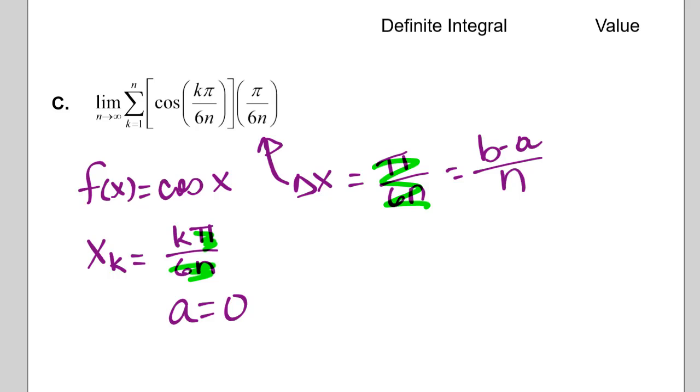We could factor off the 1 over n from each of these. So we get pi over 6 times 1 over n. And that's equal to b minus a times 1 over n. Okay. So the 1 over n's cancel, we get that b minus a is equal to pi over 6. But we also just said that a was equal to 0. So that means b is equal to pi over 6. Okay.